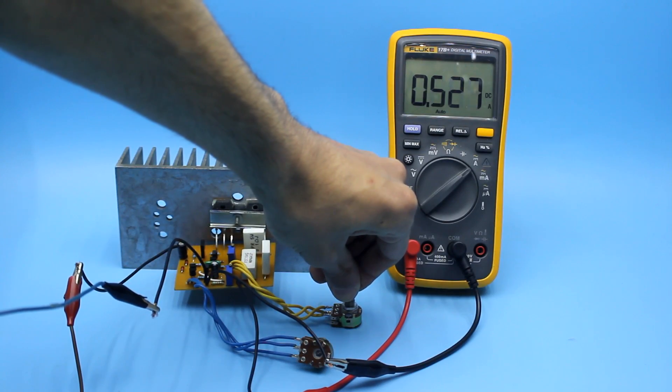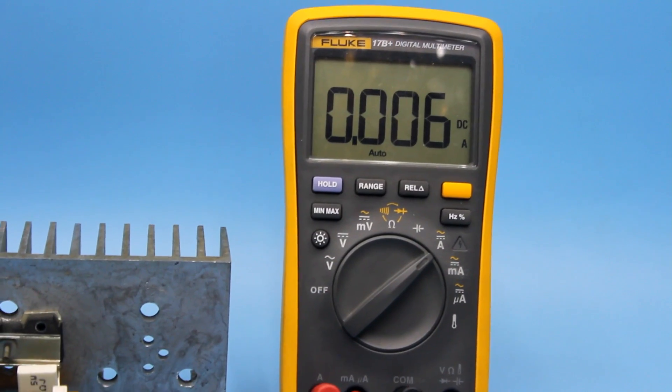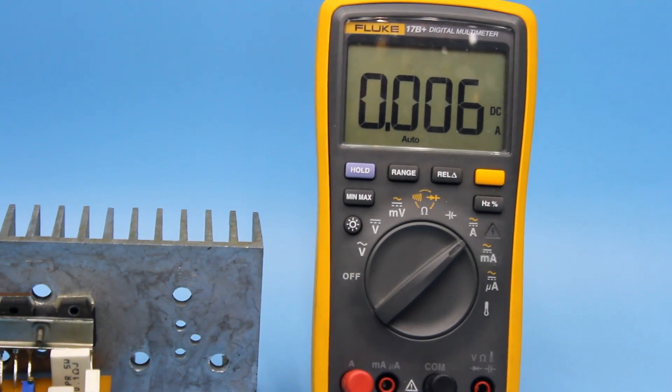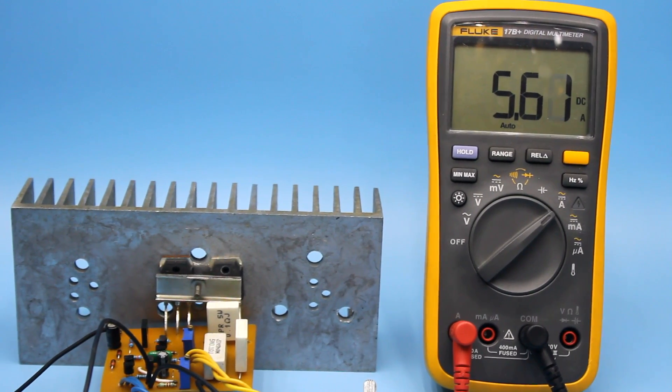Now, let's check the current. As you can see, the minimum output current can be dropped down to 0, and the maximum is 5A without problems.